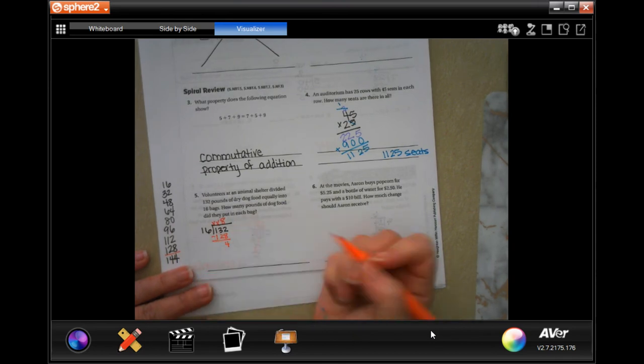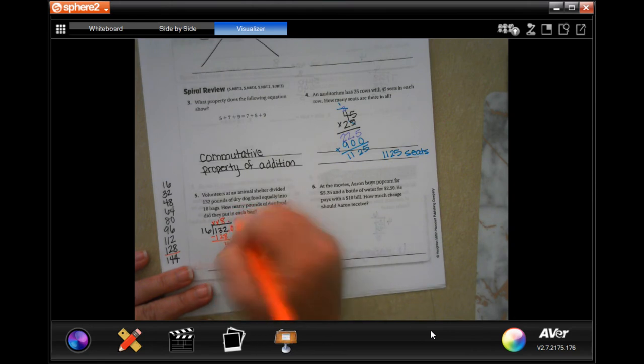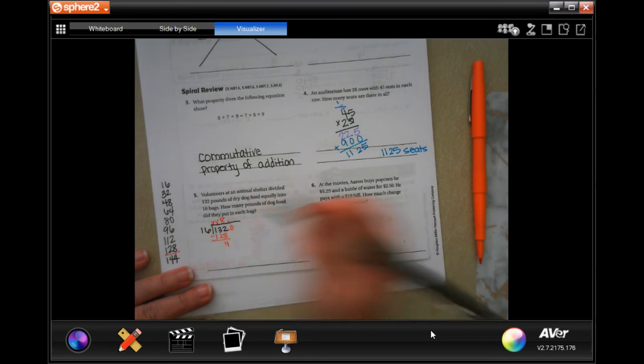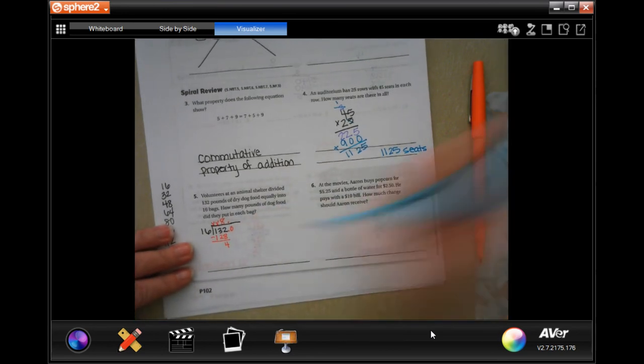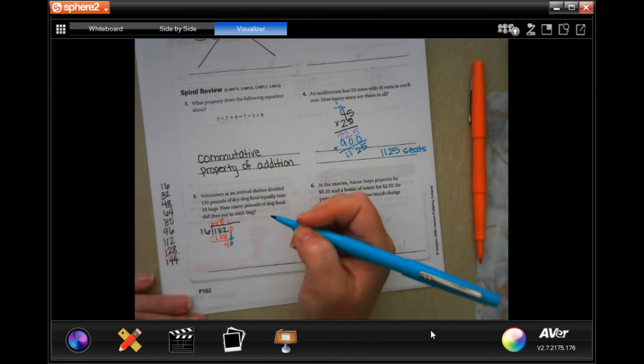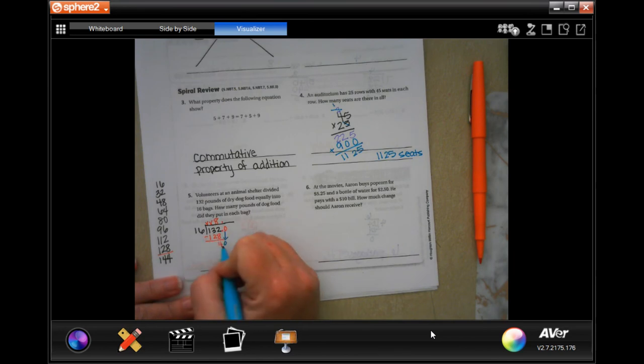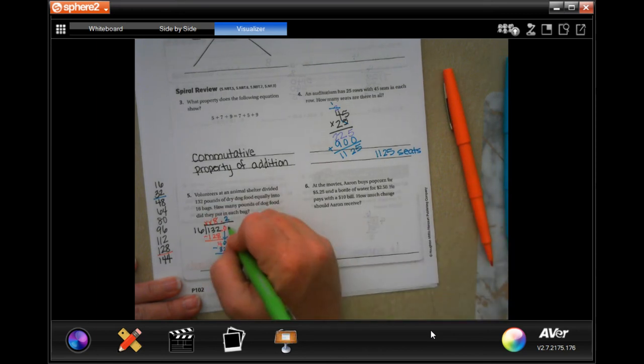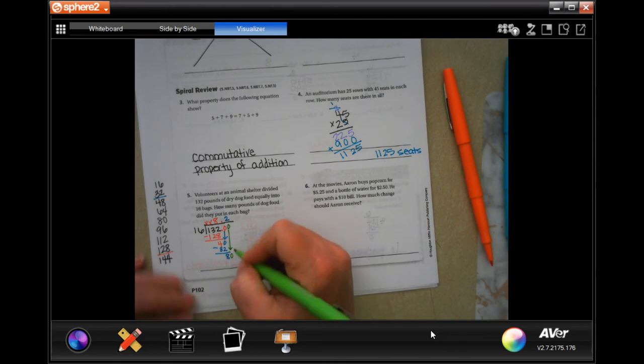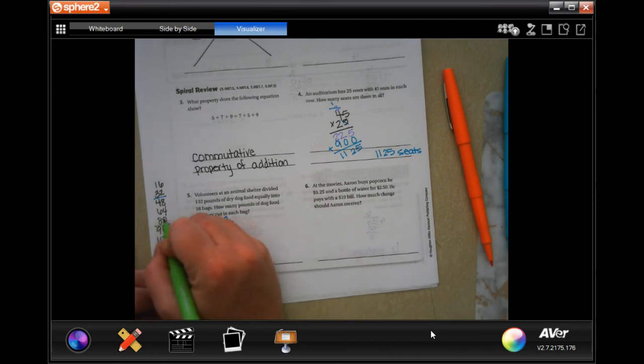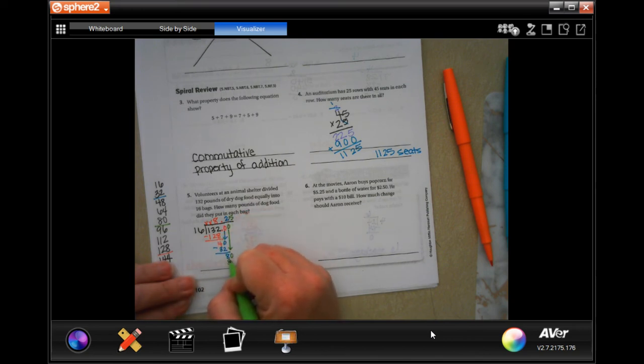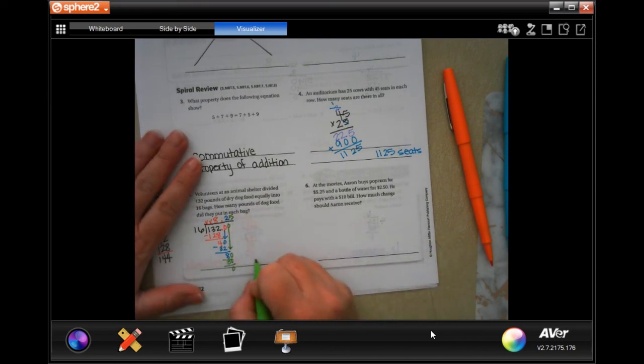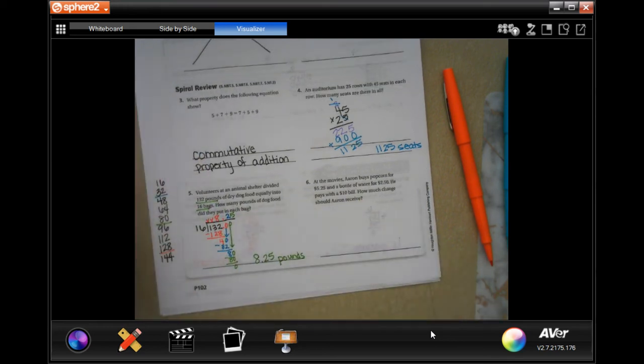When I subtract, I would get 4. I'm going to put a decimal, put a decimal, put a zero. I'm going to make it a little bit longer so we can pull that out. Now 4 is less than 16, so I can bring down that zero. Now 16 is going to go into 40 twice for 32. I subtract, I get 8. Eight is smaller than 16, so I'm going to add one more zero, bring it down. 80—well, there's 80 right there—one, two, three, four, five times. That is 80. We subtract, we get zero. So 8.25 pounds, being measured in pounds.